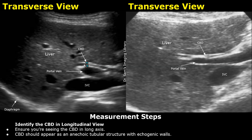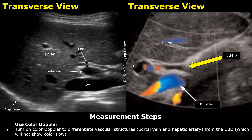To measure the CBD, ensure that you are seeing it in its long axis view. In these images, this is the common bile duct. It is thinner than the portal vein, and it also has hyperechoic walls. Color Doppler is applied, and you can see that the common bile duct does not show any color flow, whereas the portal vein has color flow because it is a vascular structure. You can easily differentiate the CBD from the portal vein by using color Doppler.